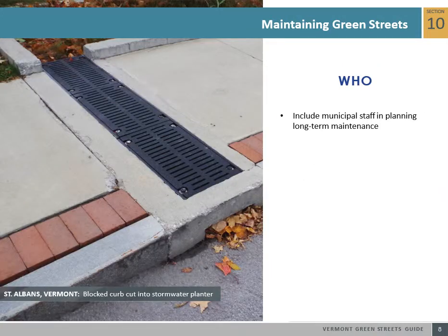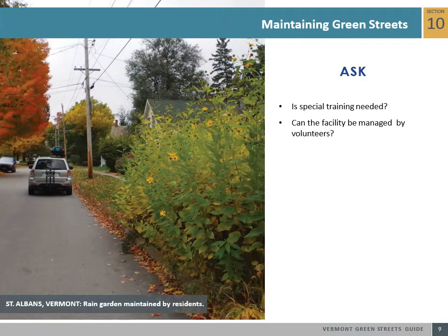Decentralized green stormwater infrastructure was in part motivated by the practicality of maintenance on a smaller scale. Rather than requiring heavy equipment for the maintenance of centralized systems such as detention ponds, green infrastructure in streetscapes often can be maintained with shovels, rakes, and pruners. It is important to remember that if green infrastructure will require duties that depart from current practices, staff training needs should be identified.